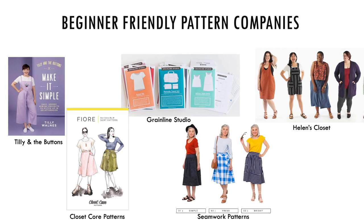The big four sewing pattern companies are Simplicity, Vogue, McCall's, and Butterick. These patterns are easy to find at your local Joann's, but sometimes the pattern instructions have limited pictures and can be challenging for beginners. All of these indie pattern companies offer thorough instructions with lots of pictures, online videos, and sew-alongs. Tilly and the Buttons is really great — they also have several beginner-friendly books. There's also Closet Core Patterns, Seamwork Patterns, Grainline Studio, and Helen's Closet.